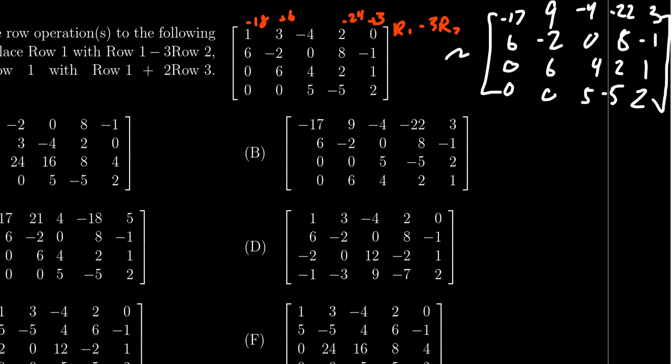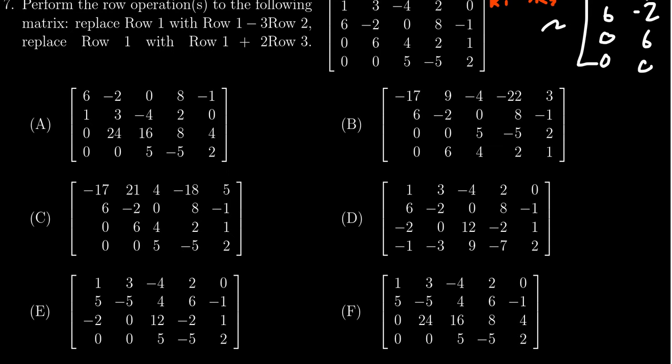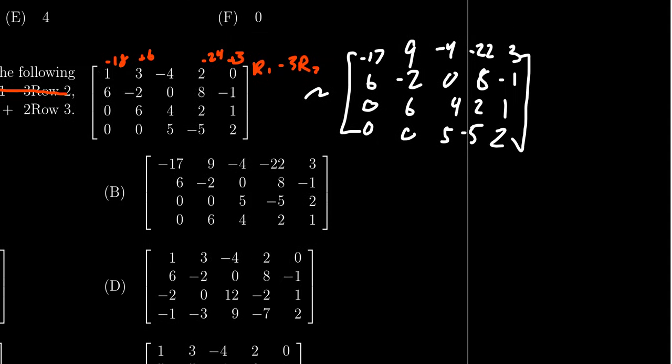So that takes care of the first operation. I'm going to slash that out because we've done it now. Now, the next thing is we have to take row 1 and replace it with row 1 plus 2 times row 3. So let me record that down over here. We're going to take our current row 1 and we're going to add to it 2 times row 3.